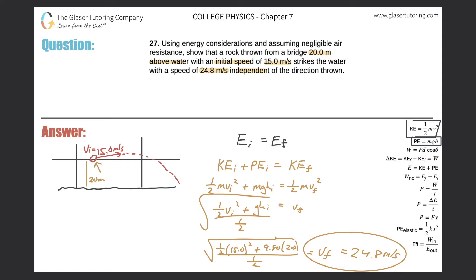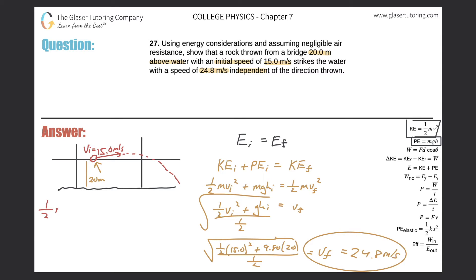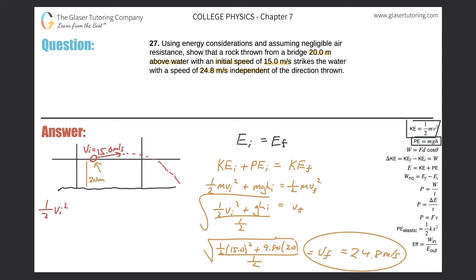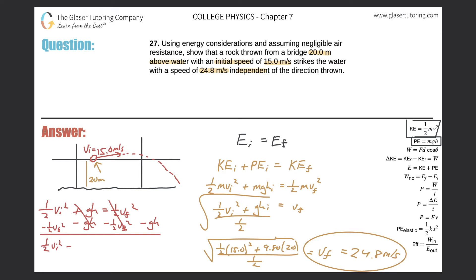Starting from the mass-cancelled equation: one-half v_i squared plus gh equals one-half v_f squared. I'll do a little algebra — subtract gh from the left and bring it to the right, and subtract one-half v_f squared from the right and bring it to the left. After cancellation, I'm left with: one-half v_i squared minus one-half v_f squared equals negative gh.